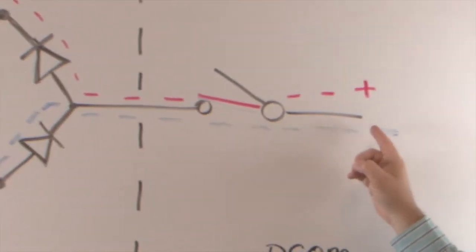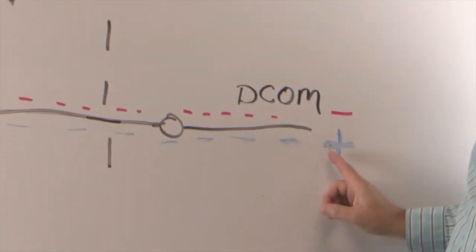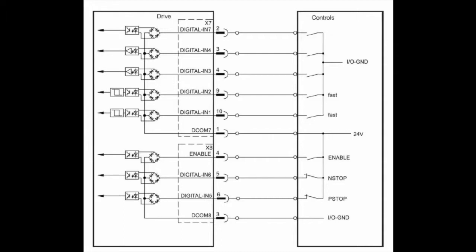Every system wired with inputs and outputs will have a combination of sourcing and sinking. Another confusing point is that connectors X7 and X8 are not connected together internally.